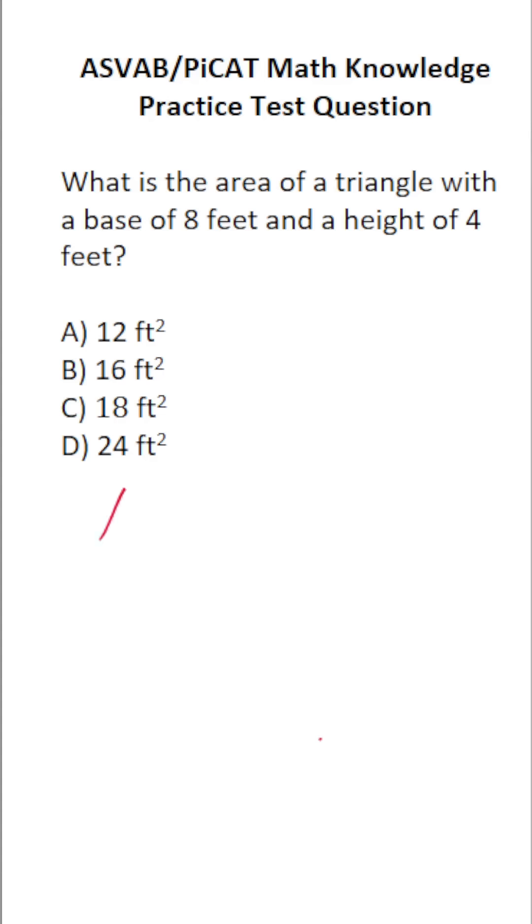In order to find the area of a triangle, you're always going to use the formula area equals one half base times height. And as a quick reminder, you're not permitted to use a reference sheet on the actual ASFEB or PyCat, so you've got to commit this formula to memory.